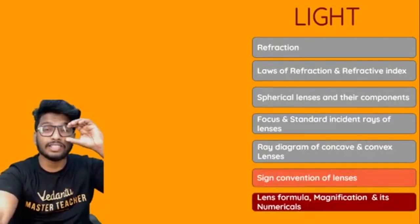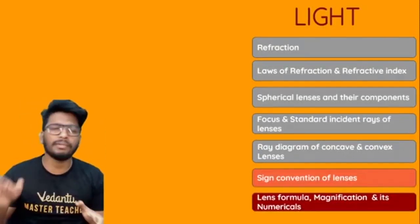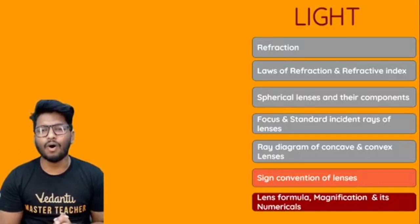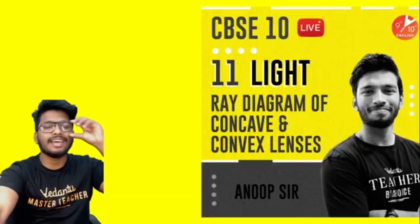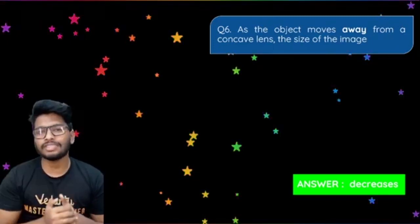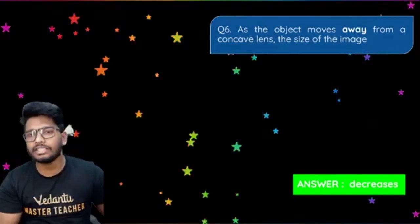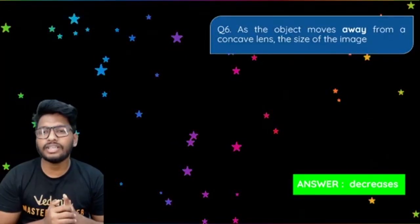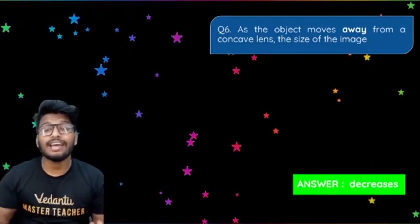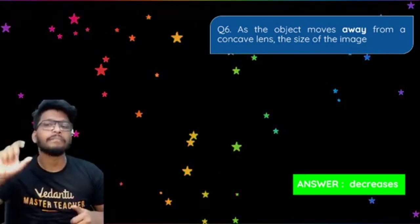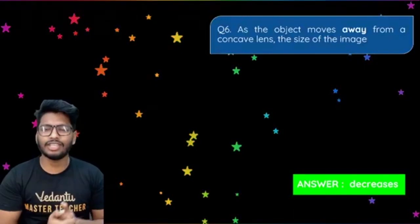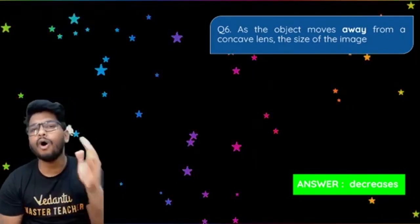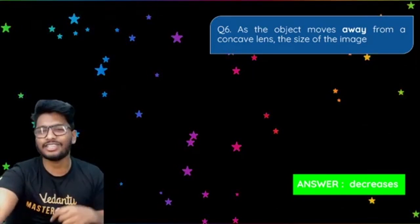Sign convention of lenses is a very small topic — just give me the next 10 to 15 minutes and it'll be done. We'll also do some quiz questions. For the homework from last session: as the object moves away from a concave lens, the image size decreases. As you bring the object closer, the image gets bigger and bigger. The answer is it decreases — a simple question.